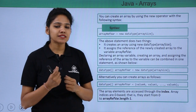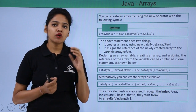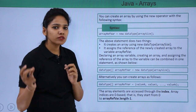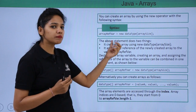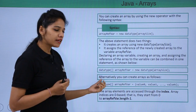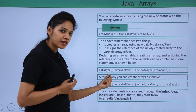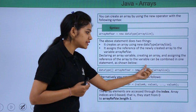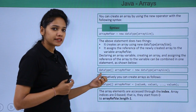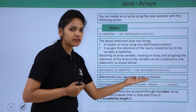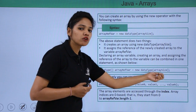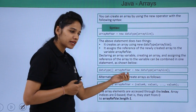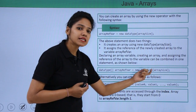A variable can be of an int or string type which holds a single value. But if you want to hold a sequence of values, you need to create a variable which is an array reference. You provide the data type, then brackets, then the name of the array, equals to new data type. This data type should be the same as the variable's data type. For example: int[] myList = new int[10]; — creating an array of size 10.